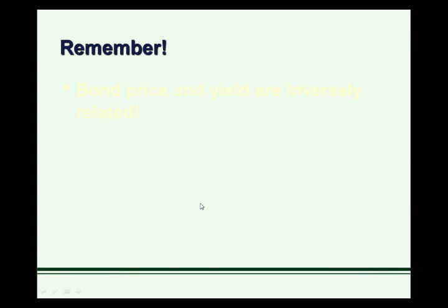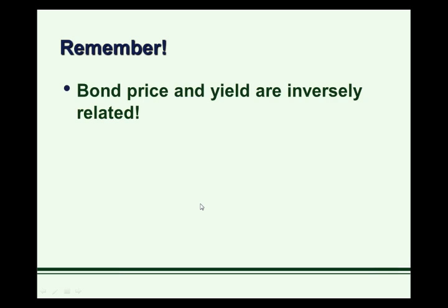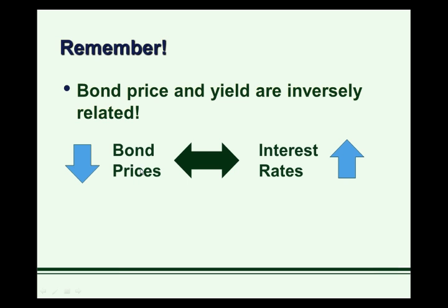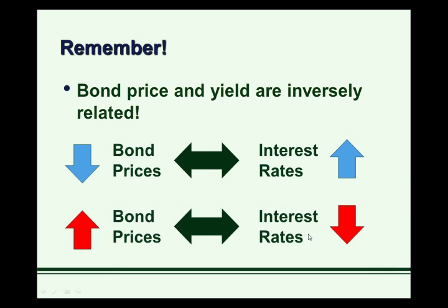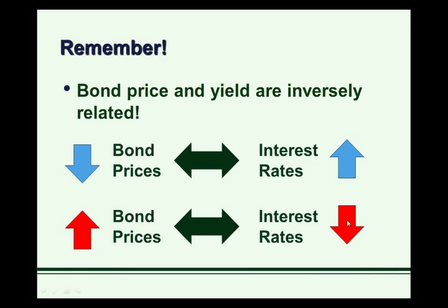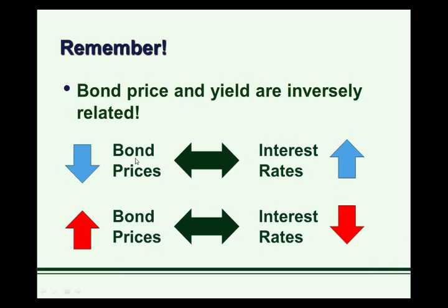Remember, when we're looking at the price-interest rate connection, bond price and yield are inversely related. That means when bond prices fall, we're going to end up with higher interest rates in equilibrium. Conversely, if bond prices rise, we'll end up with lower interest rates. So shifts in bond supply or demand will change the equilibrium bond price, which means they will change the equilibrium interest rate in the opposite direction.